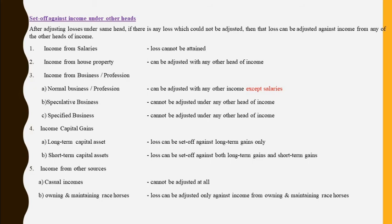Income from capital gains — capital gain loss cannot be adjusted with any other heads of income. Long term capital loss can be adjusted only from long term capital gain. Short term capital loss can be adjusted only from long term or short term capital gain. It cannot be brought outside the head and adjusted with any other heads of income. Income from other sources — casual income loss cannot be adjusted. Owning and maintaining racehorses also cannot be adjusted outside the head of income.